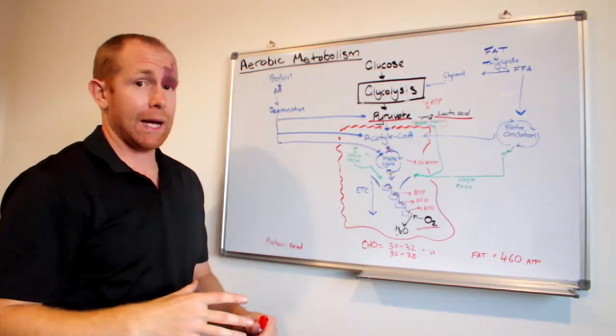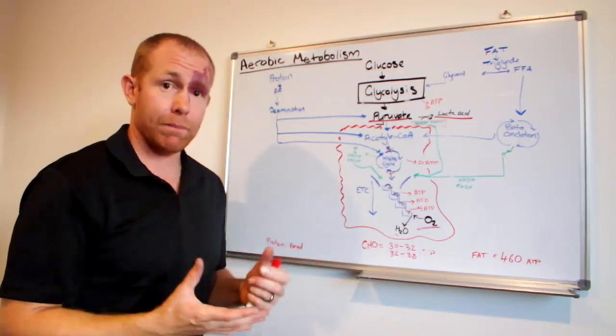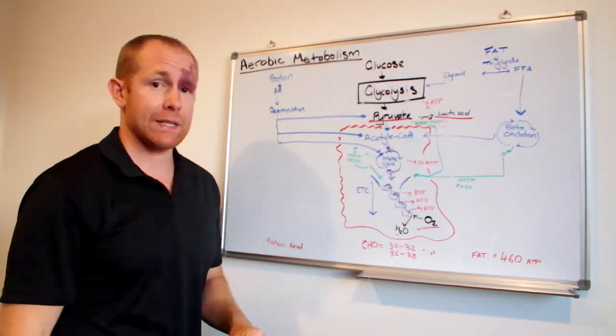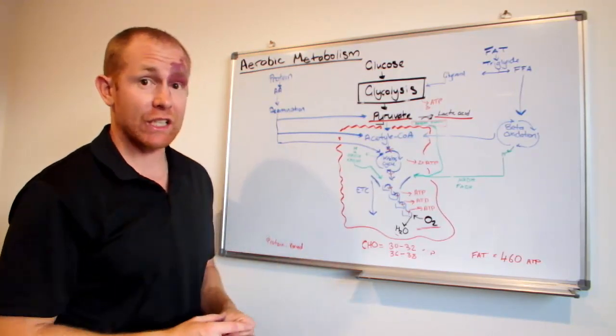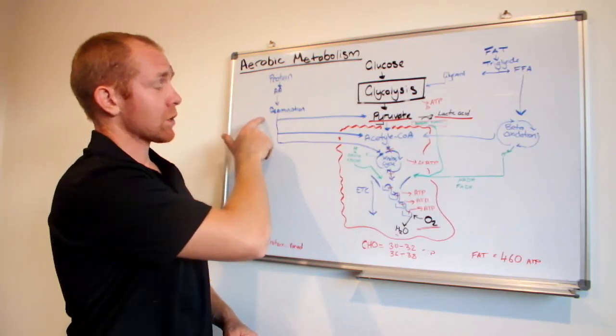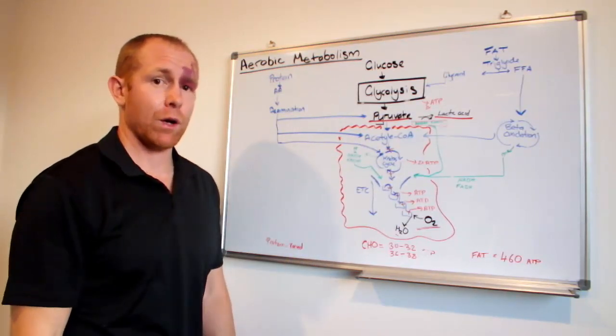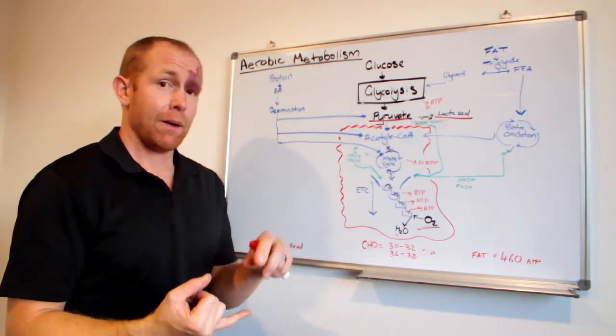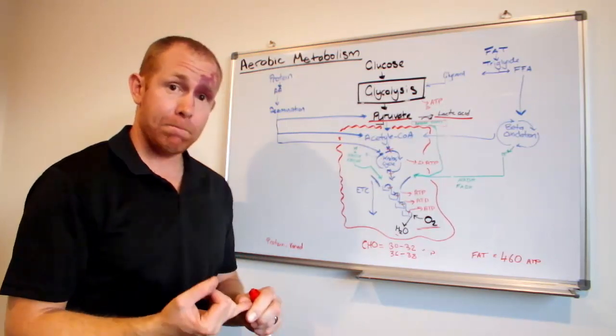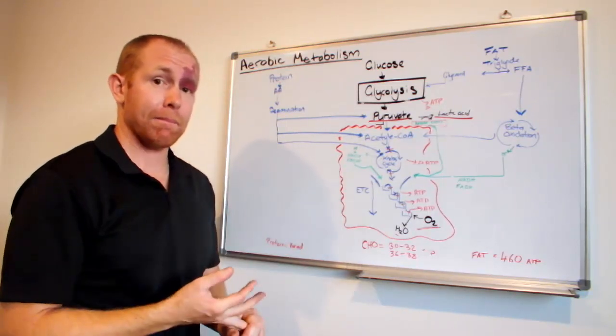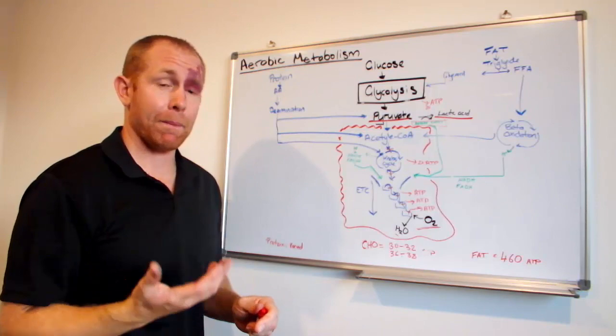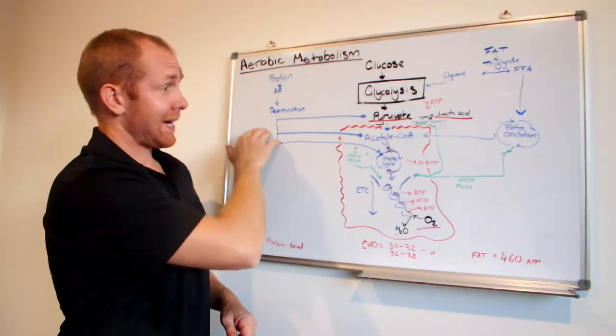Protein becomes broken down into what we call amino acids. And depending on what amino acid it is depends on how much energy you get out of it. But a process called deamination has to happen with those amino acids. And that happens primarily in the liver, but also in muscle cells for some amino acids.